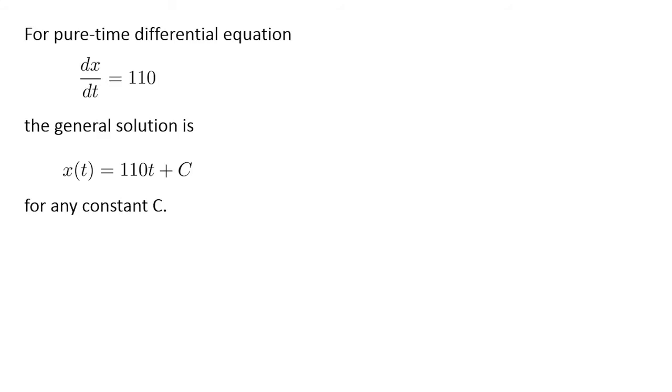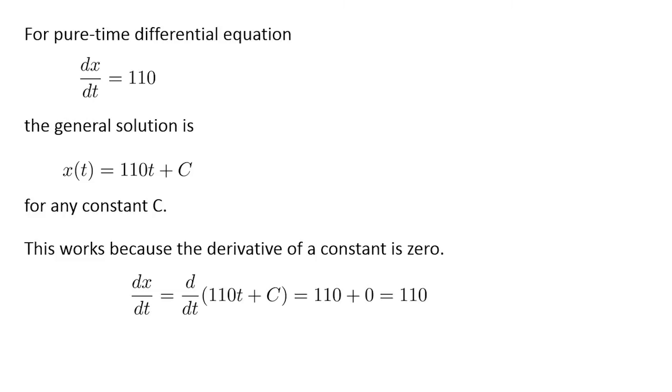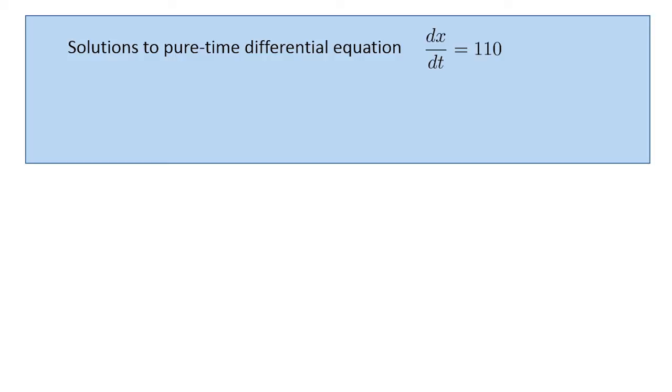We use the concept of a general solution to represent the fact that you can add any constant and you'll still have a solution to the differential equation. We'll use the variable C to indicate an arbitrary constant that can take on any value. For our differential equation dx/dt equals 110, the general solution is x(t) equals 110 times t plus C. We can verify that the general solution indeed satisfies the differential equation by taking the derivative. Since the derivative of a constant is zero, the constant drops out upon differentiation, and we obtain that dx/dt is equal to 110. We have seen two types of solutions to our differential equation. The general solution, x(t) equals 110t plus C, represents all possible solutions to the differential equation and contains an arbitrary constant C. For any particular solution, such as x(t) equals 110t plus 230, we've pinned down the constant to a particular value, in this case 230.